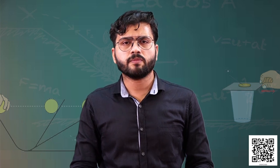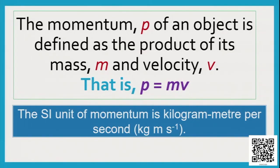Let's look at the definition of momentum. The momentum p of an object is defined as the product of its mass and velocity. The expression is p = mv, where p indicates momentum, m indicates mass, and v indicates velocity.